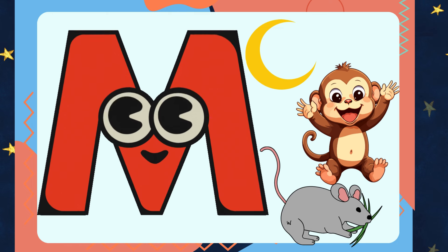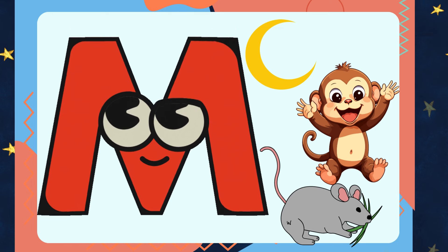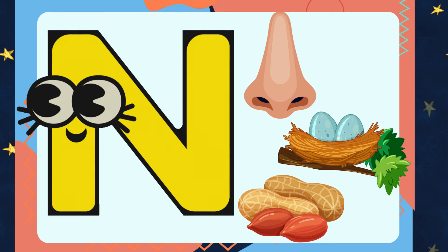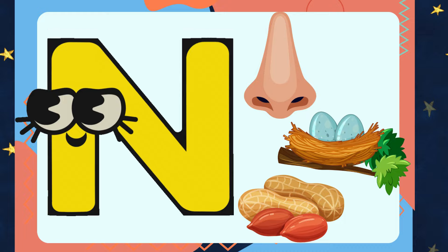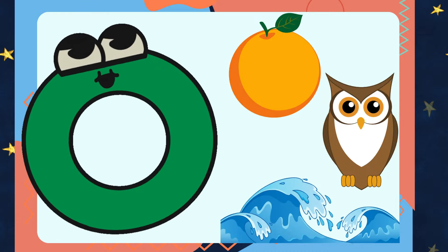M is for Moon, Monkey, Mouse. N is for Nose, Nest, Nut.